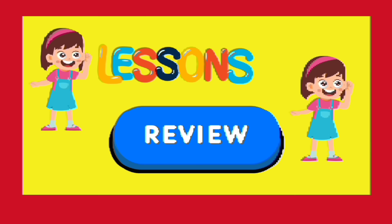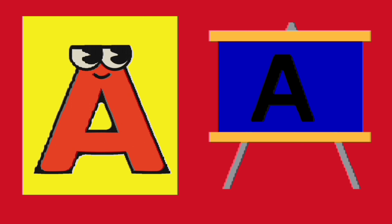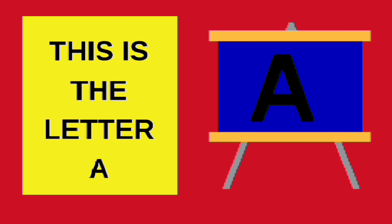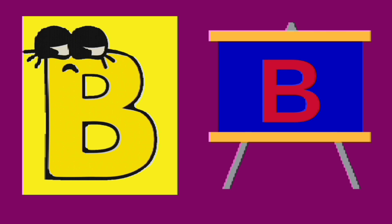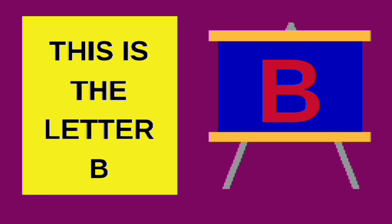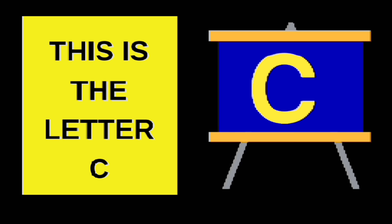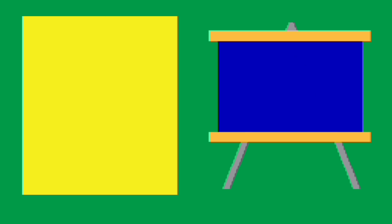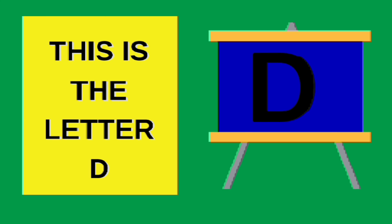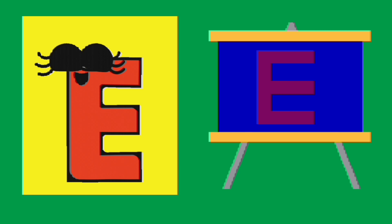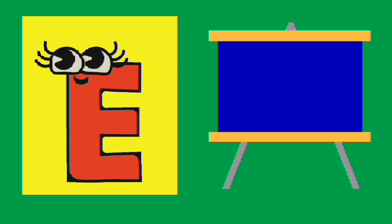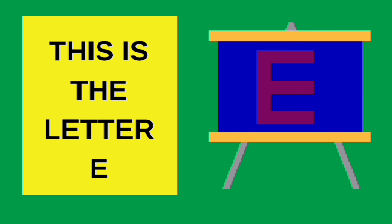Lesson Review. A. This is the letter A. B. This is the letter B. C. This is the letter C. D. This is the letter D. E. This is the letter E.